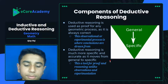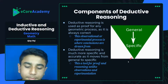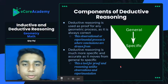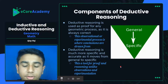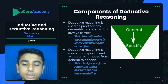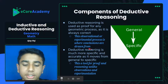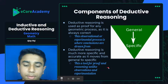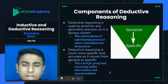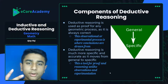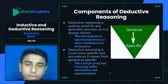Deductive reasoning moves from general to specific and is a tool for proof and reasoning, unlike observations and experimentation. If you're trying to prove a certain theorem or equation in geometry — which you'll have to in every circumstance — deductive reasoning is the most accurate way to provide proof for any geometric process. You can't rely on measurements or experiments because you don't know whether they're accurate yet, but deductive reasoning already is accurate.